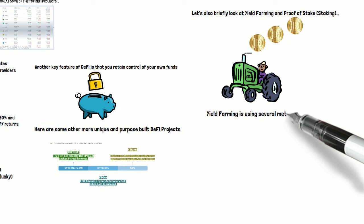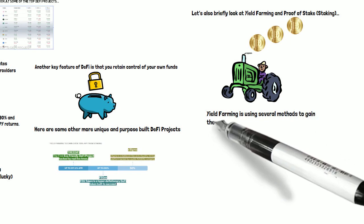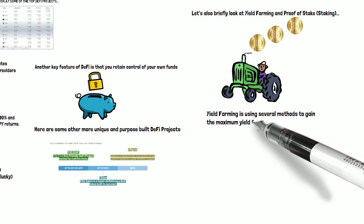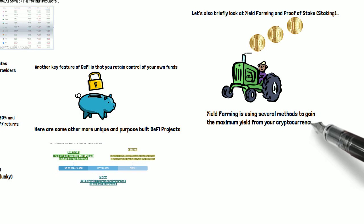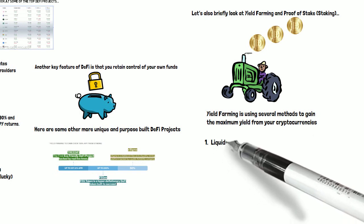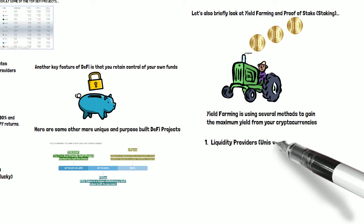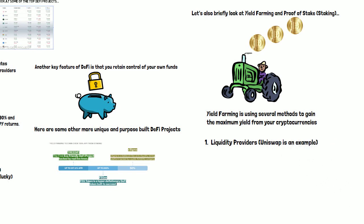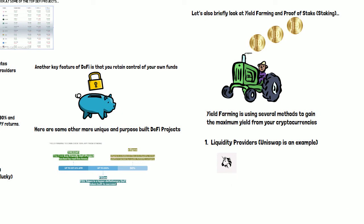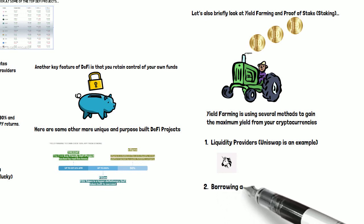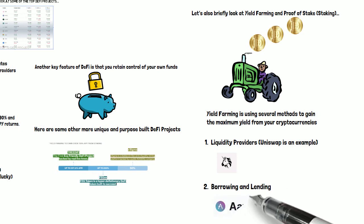The first approach is what we call liquidity providing, which is something you can do on Uniswap. On Uniswap you provide liquidity, basically providing a pair of tokens like Wrapped BTC and Ethereum, or Compound DAI — which is a stablecoin — and Ethereum. That allows the exchange to have liquidity to make exchanges for people. As you do that, they give you a fee every single time there's an exchange using the liquidity you provide. You can get some very nice returns using these liquidity providing options, and Uniswap is one of the most well-known.